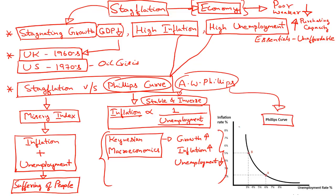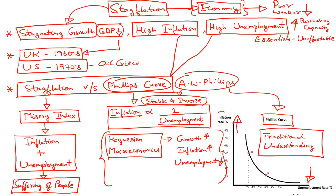Based on his understanding of Keynesian macroeconomics, A.W. Phillips believed that inflation and unemployment always share a stable and inverse relationship. Based on this understanding, he developed the Phillips curve. The Phillips curve shows that whenever inflation increases, there is a stable decline in unemployment and vice versa. This was our traditional understanding of the relationship between inflation and unemployment based on the success and popularity of Keynesian macroeconomics.